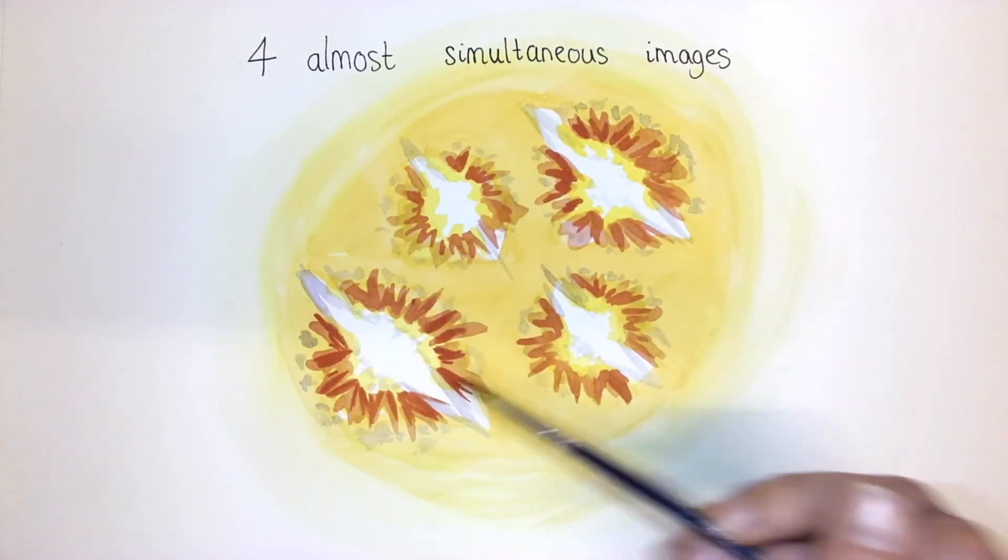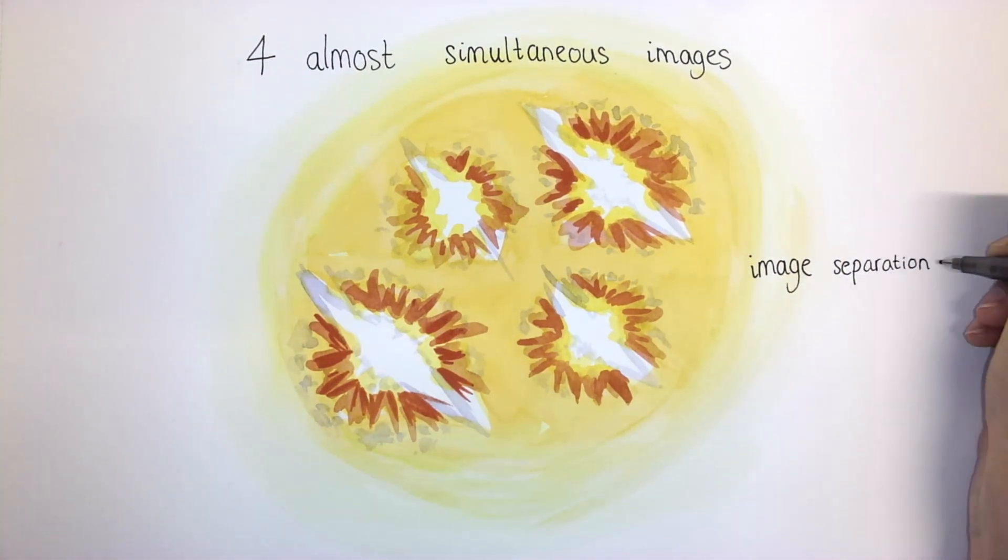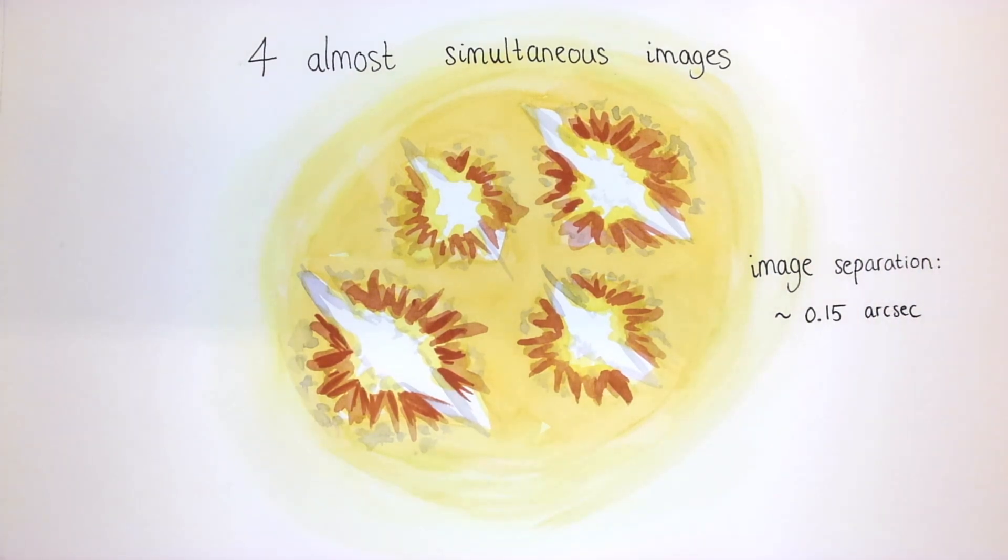We also learned that the Supernova Zwicky system is extremely compact. With image separations of around 0.15 arcseconds, or 10 to the minus 5 degrees, it's one of the smallest lens systems ever found.